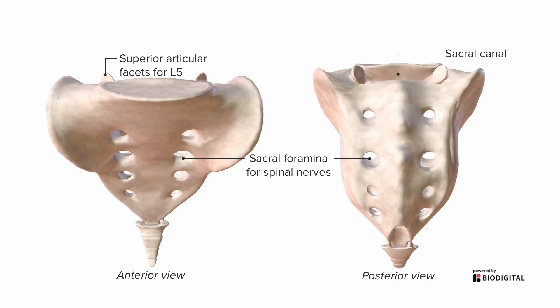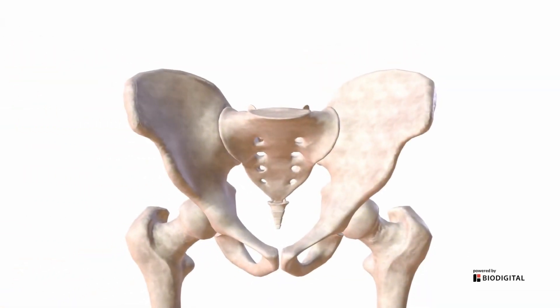Finally, at the very end, we have three, four, or five fused vertebrae called the coccyx — also called the tailbone because it's at the tail end. The sacrum is also very important because it connects us to the pelvis and lower limbs, making it a critical structure for transmitting force and movement from our hips.